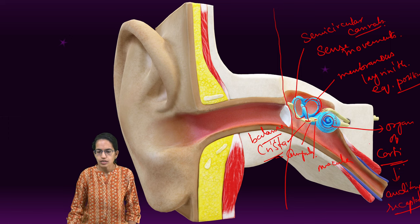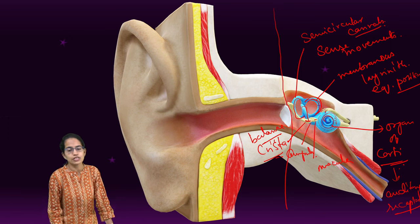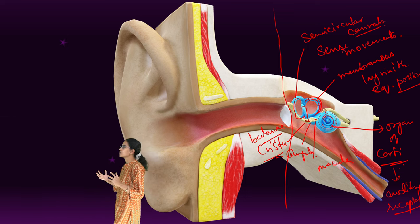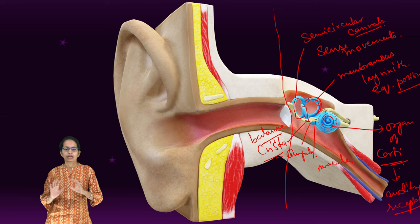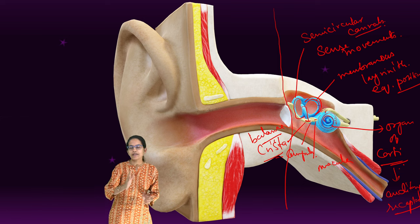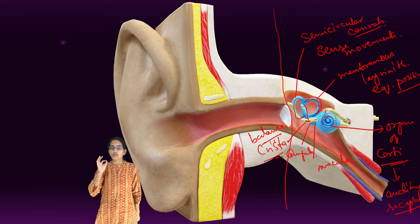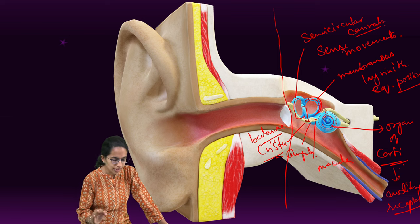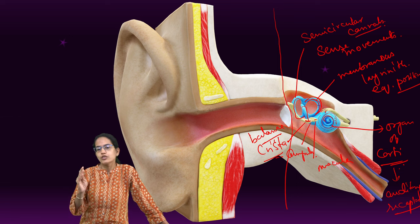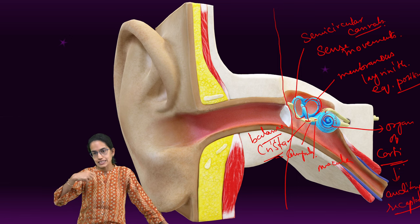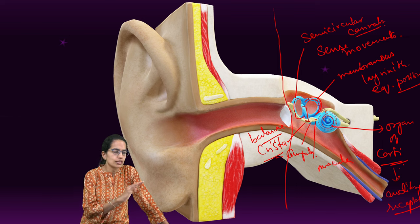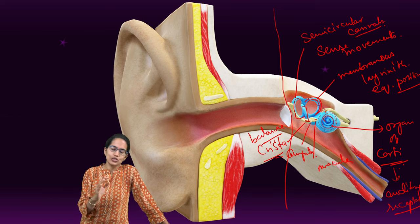There is also the vestibule, which is the chamber where you sense for gravity and positioning. Those are some of the important key points. When we talked about the middle ear, we talked about malleus, incus, and stapes. Stapes is the smallest bone, and attached to it is the smallest muscle, known as the stapedius muscle.